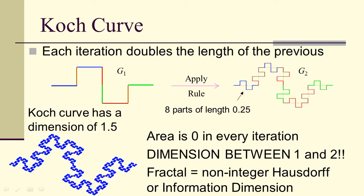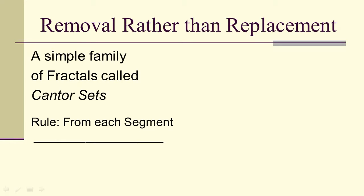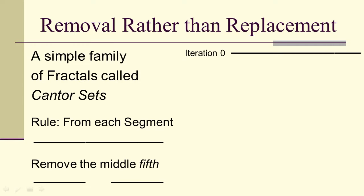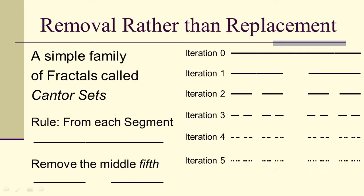A fractal is a structure that has a non-integer Hausdorff or information dimension. We can create fractals in different ways. We can remove rather than replace. And usually, that's how we get what are called Cantor sets. Our rule in this case is from each segment, let's remove the middle fifth. So we just divide into five parts, take the middle fifth, and throw it out. If we iterate, the first iteration is a segment. The second iteration has the fifth removed. Then the fifth is removed from each one of the two segments. Now we have four segments. Then remove the fifth from those four segments. Now we have eight. And we continue indefinitely.